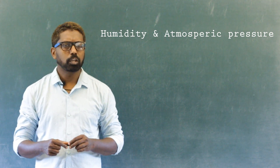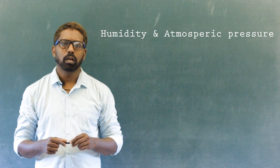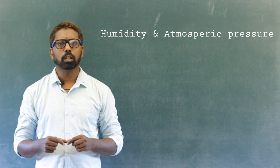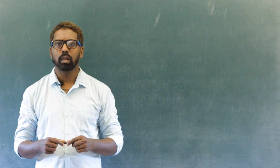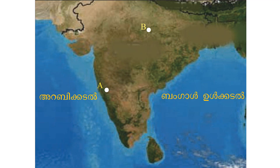Humidity and atmospheric pressure are inversely proportional. Two places at the same elevation are marked as A and B in the figure. Which of these has a lower atmospheric pressure, and why?